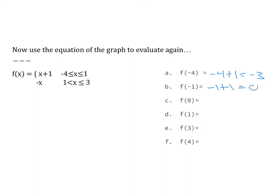For f(0): 0 is between negative 4 and 1, so I use the first piece: 0 plus 1 equals 1. For f(1): the second piece requires x strictly greater than 1, and 1 is not greater than itself, so I use the first piece: 1 plus 1 equals 2. For f(3): 3 is not between negative 4 and 1, but 3 is less than or equal to 3, so I use the second piece: negative 3 is the answer.